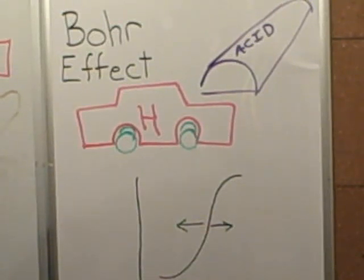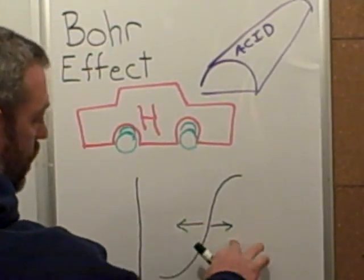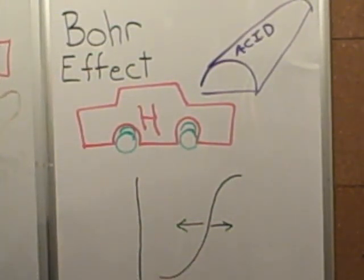Think about muscles working out and exercising. Those tissues are going to need more oxygen. So in order for this sigmoidal curve to move to the right,